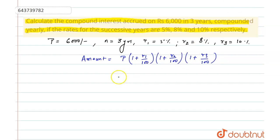So after putting the values, we will get A equals P is 6,000 times (1 plus 5 by 100) times (1 plus 8 by 100) times (1 plus 10 by 100).